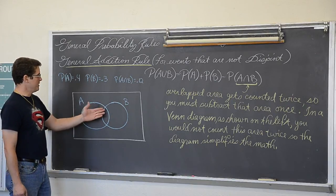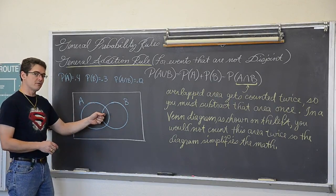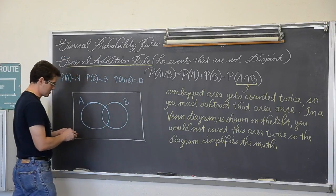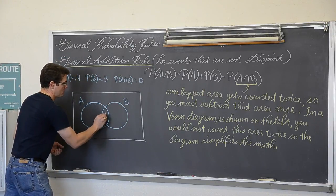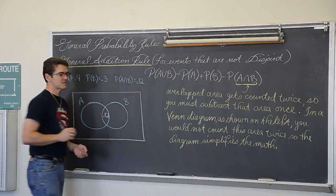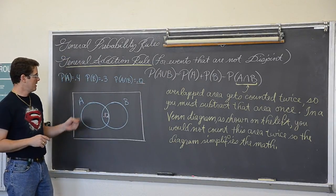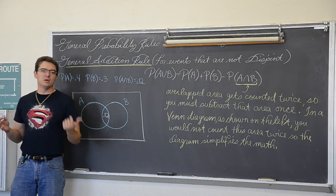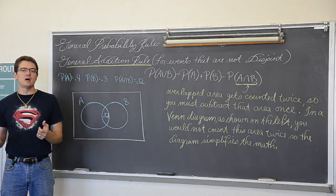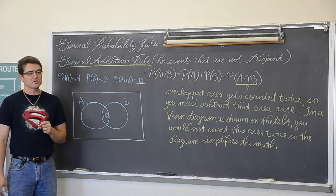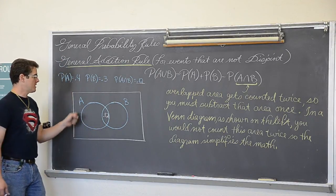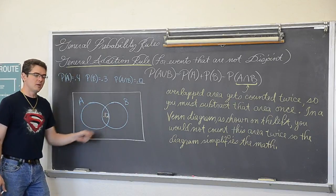So when you set up a Venn diagram, you want to do the overlapped area first. So the probability that A and B occur together is 12%. So 0.12. And that is the probability that both occur together. Now the circle for A, the probability of A occurring period, regardless of B occurring or not, the entire circle has to represent 40%. Now this is why you want to do the overlapped area first. Because that entire circle must add up to be 0.4.